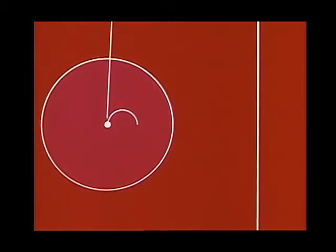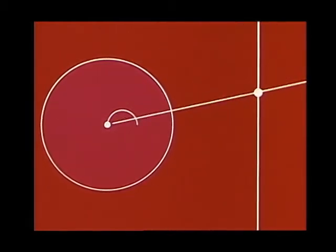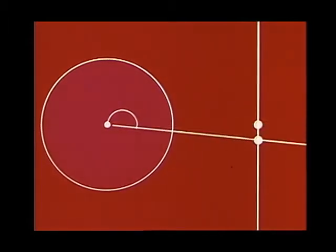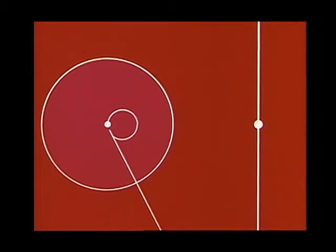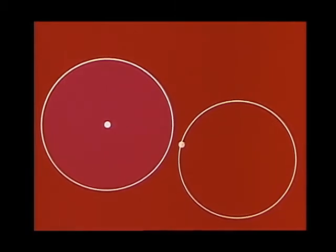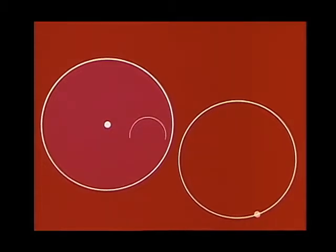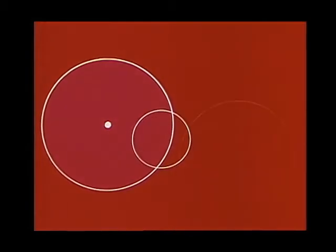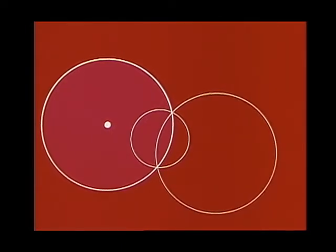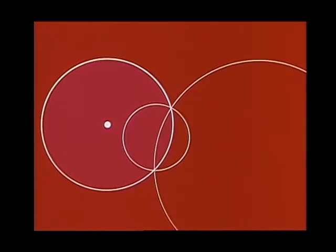Therefore, as a point moves on a circle through the center, its inverse traces a line not through the center. As a point moves around a circle not through the center, its inverse traces a circle called the inverse circle. If a circle intersects the circle of inversion, so does its image, and in the same points, for the points of the circle of inversion are invariant.